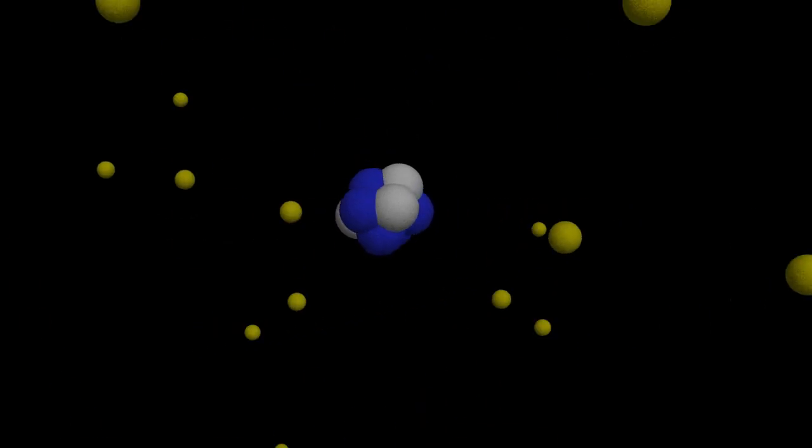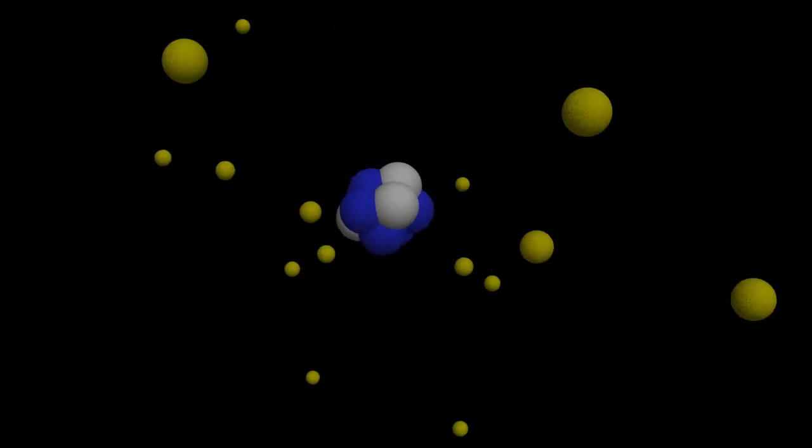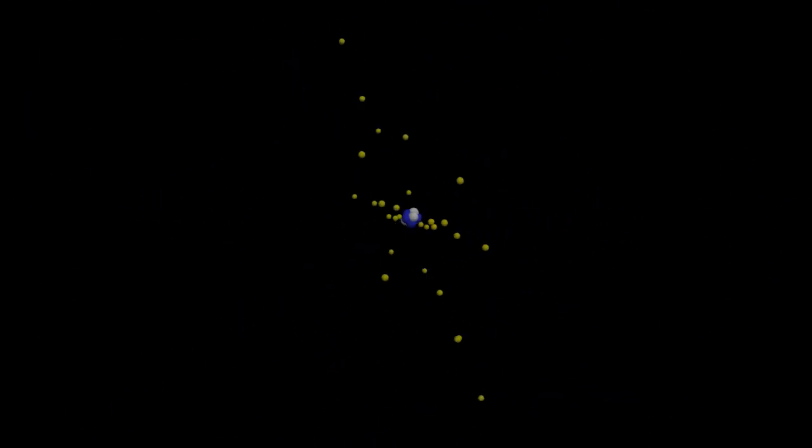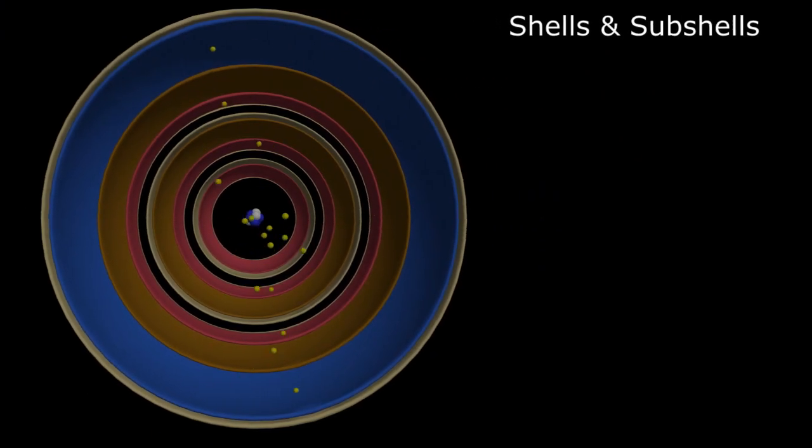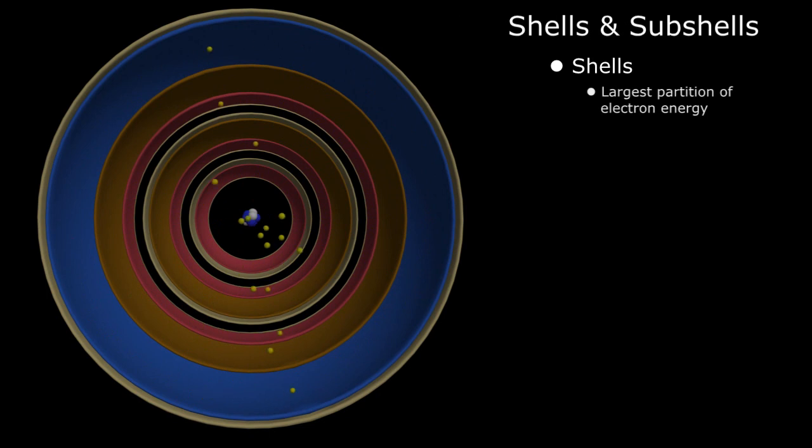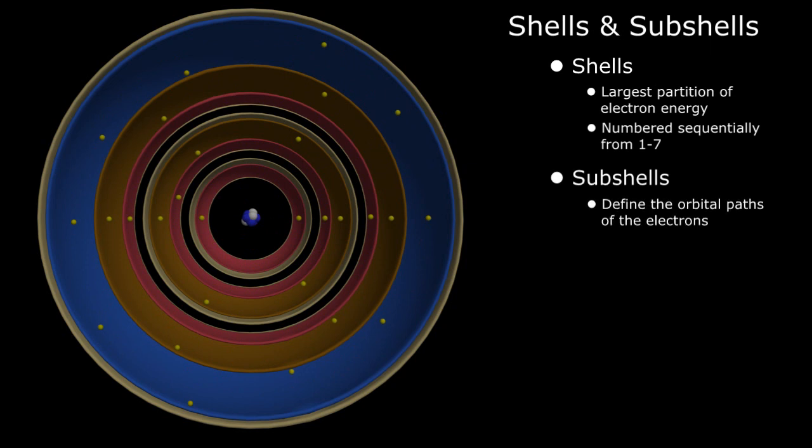Remember that the electrons aren't randomly orbiting the nucleus of an atom, but hold specific energy levels defined by shells and subshells. Shells are the largest partitions of electron energy around the nucleus, and are numbered sequentially from 1 to 7. Subshells define the orbital paths of the electrons in each shell, and there are four stable subshells listed in increasing energy as S, P, D, and F.